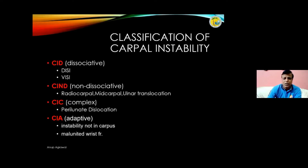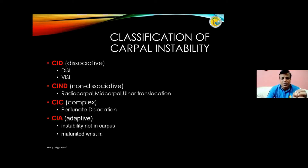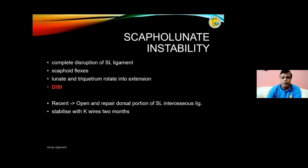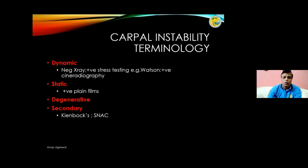The classification includes dissociative, non-dissociative, complex, and adaptive instability. The classification itself is complex, but the key concept is the scapholunate angle. In scapholunate instability, there is complete disruption of the scapholunate ligament — the scaphoid flexes while the lunate and triquetrum rotate into extension, which is classic DISI. Carpal instability can be dynamic (negative plain film, positive on stress views), static (visible on every plain film), degenerative, or secondary, and can ultimately lead to lunate avascular necrosis.